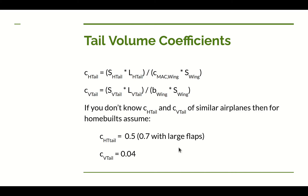Keep in mind Raymer's figures are for home-built airplanes, which are much heavier than ultralights. So the coefficients we would use for an ultralight would be somewhat different — likely smaller — than those reference values.